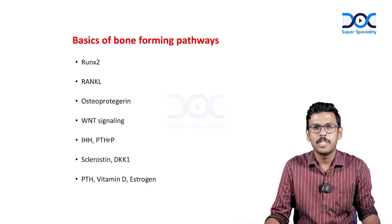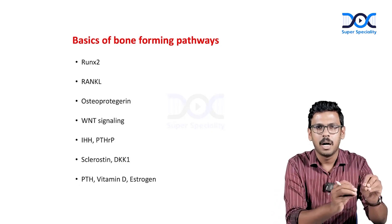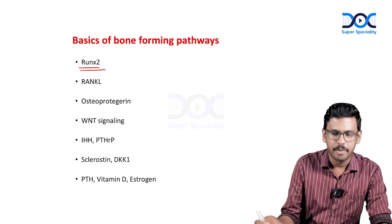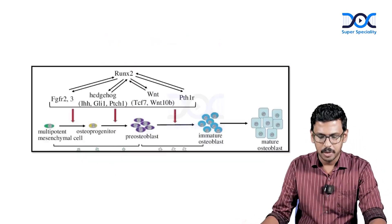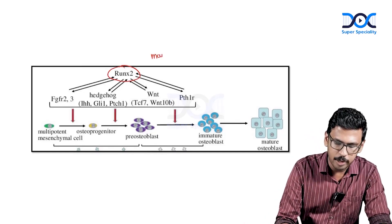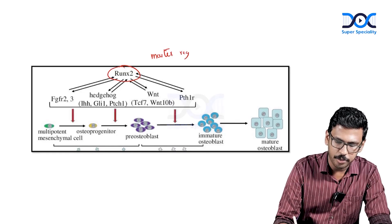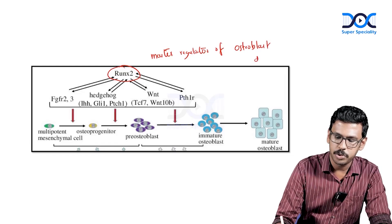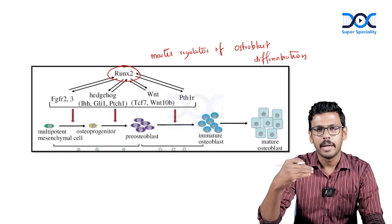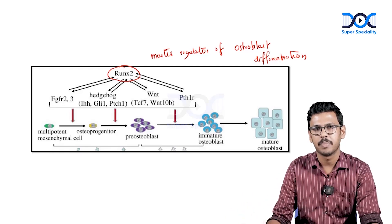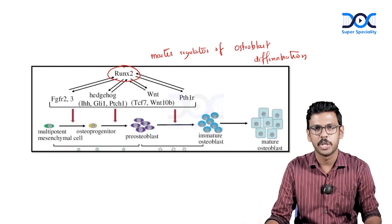Let's look at the basics of important transcription factors, hormones, and their respective actions. RUNX2 is a transcription factor considered the master regulator of osteoblast differentiation. When osteoblasts are increasingly produced, it results in osteoid production as well as subsequent mineralization, so RUNX2 is a promoter of bone formation.